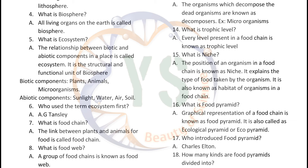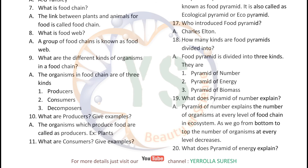What is food chain? The link between plants and animals for food is called food chain. What is food web? A group of food chains is known as food web. What are the different kinds of organisms in a food chain? The organisms in a food chain are of three kinds: producers, consumers, and decomposers.